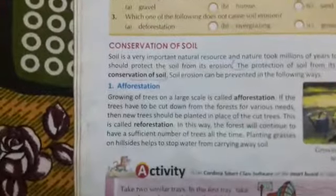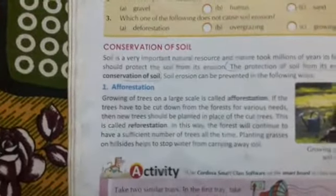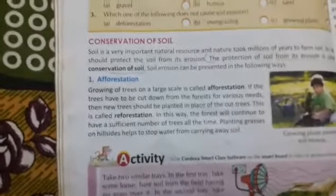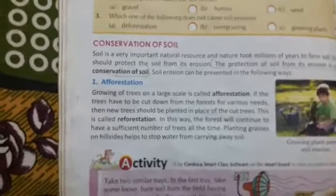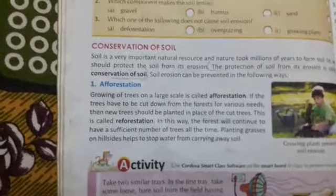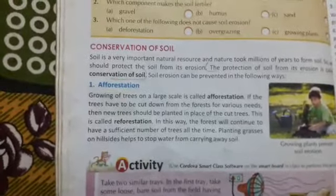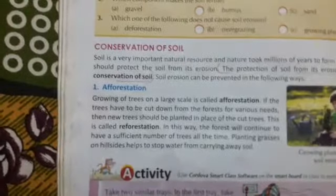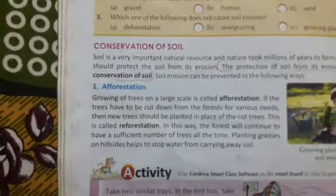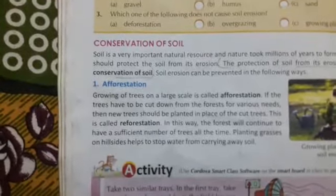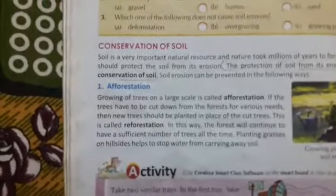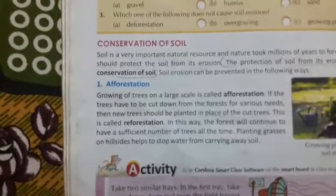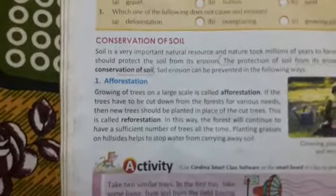What is afforestation? Growing trees on a large scale is called afforestation. If we plant our trees from time to time, the forest will continue to have a sufficient number of trees all the time, and in this way we can conserve the soil.